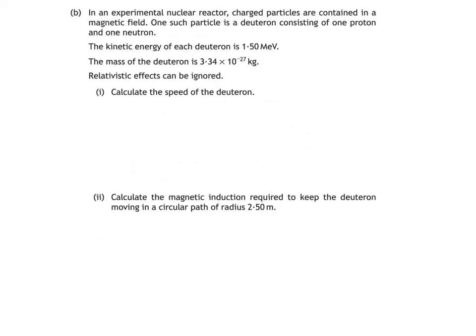Here's part B of the question. In an experimental nuclear reactor, charged particles are contained in a magnetic field. One such particle is a deuteron, consisting of one proton and one neutron. The kinetic energy of each deuteron is 1.5 mega electron volts. The mass of the deuteron is 3.34 times 10 to the negative 27 kilograms. Relativistic effects can be ignored. We're then asked to calculate the speed of the deuteron.